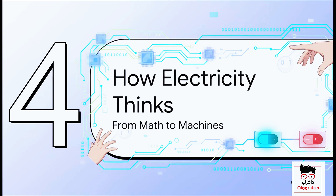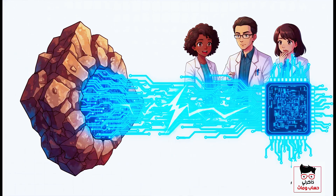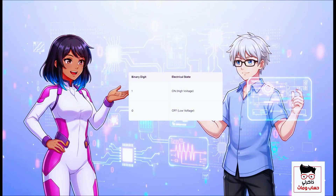The answer has nothing to do with abstract math and everything to do with the real world. It's all about electricity. A computer is just a rock that we tricked into thinking. It doesn't understand the idea of a one or a zero — it's a physical machine. It only understands one thing: the flow of electricity. Is there voltage or isn't there? And this is where the genius of binary just shines. Those two simple symbols, one and zero, map perfectly to the two simplest states of an electrical circuit — on and off. High voltage can represent a one. Low voltage or no voltage can represent a zero. It is the most direct, unambiguous way to translate our language of math into the physical language of a machine.